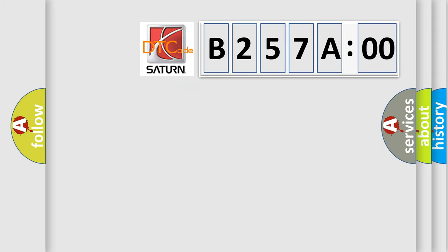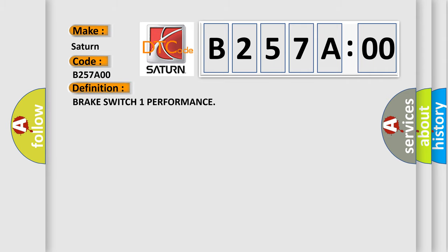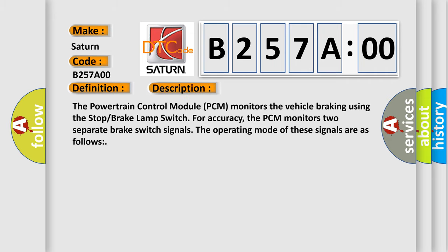So, what does the diagnostic trouble code B257A00 interpret specifically for Saturn car manufacturers? The basic definition is Brake Switch One Performance. And now this is a short description of this DTC code. The Powertrain Control Module (PCM) monitors the vehicle braking using the stop brake lamp switch. For accuracy, the PCM monitors two separate brake switch signals. The operating mode of these signals are as follows.